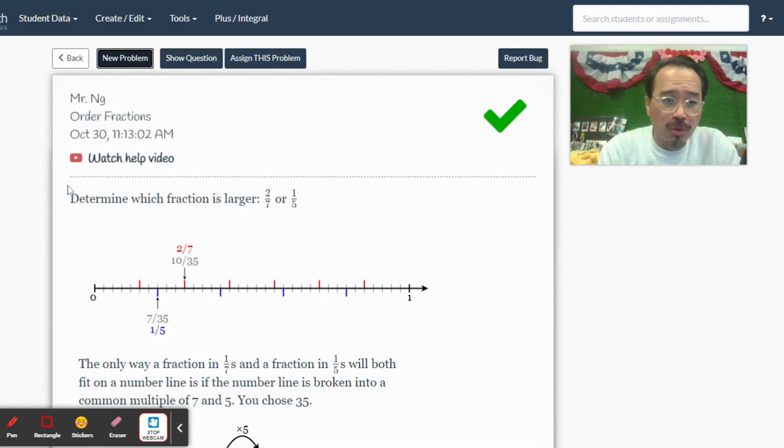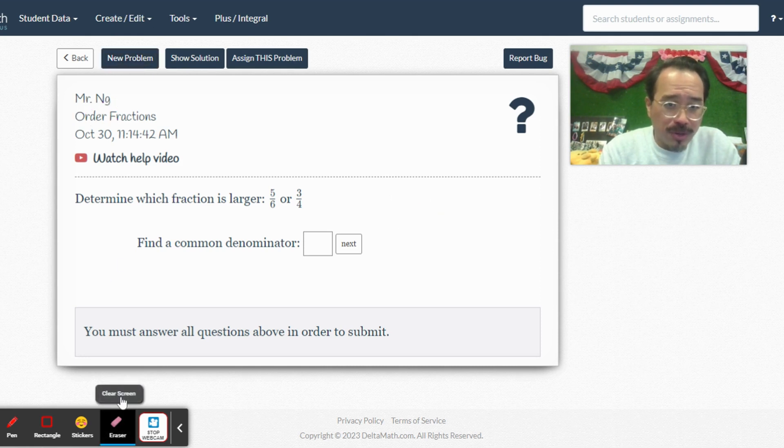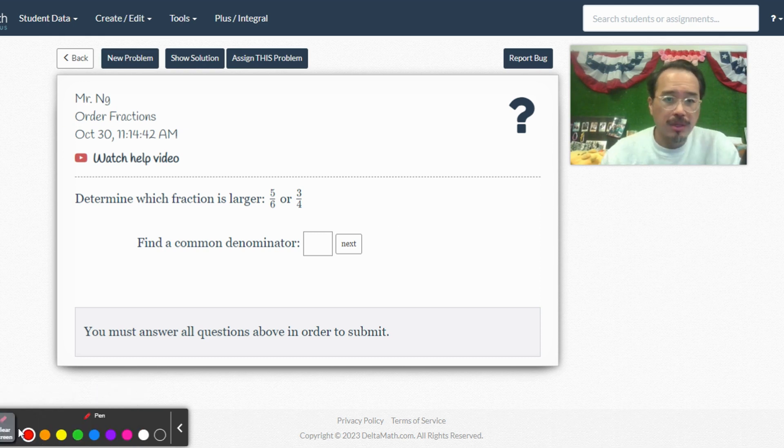All right. Let's do one more. So, let me clear the screen here. Now, here we've got 5/6, and what is that? 3 4ths. So, what's the common denominator between those two? I'll write above it. Easier to see.